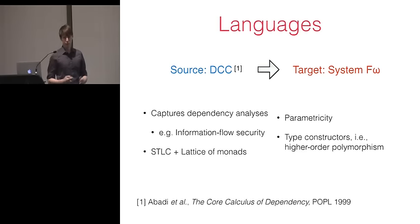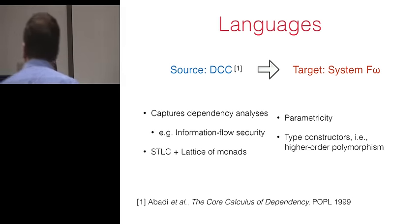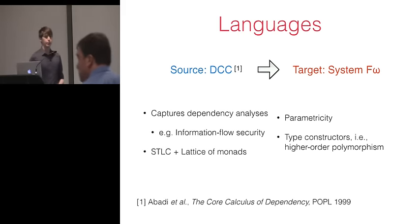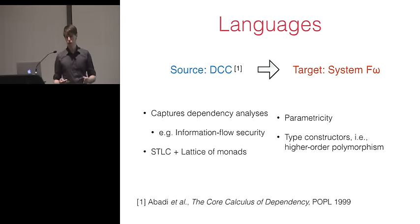So we're going to give a translation from DCC into system F-omega. Now, DCC is the core calculus of dependency. It captures a variety of dependency analyses, including information flow security. The language is essentially the simply typed lambda calculus, plus a lattice of monads that allow you to encode dependency in your program. Now, we're going to use system F-omega as our target language, because, well, we want parametricity. But as we'll see, the type constructors and the higher-order polymorphism of F-omega will be important to our translation.